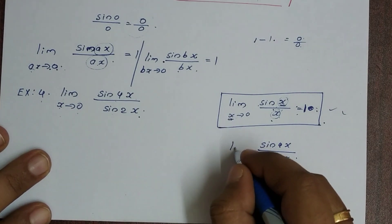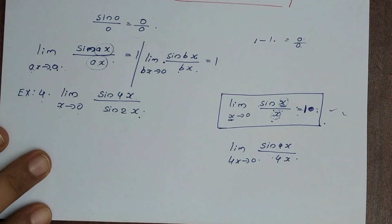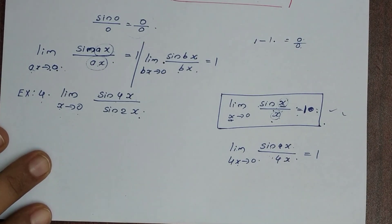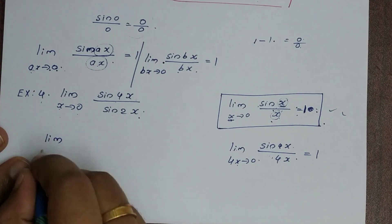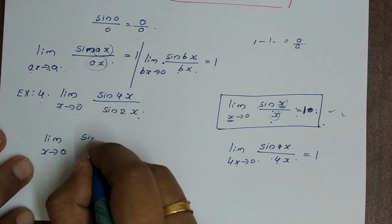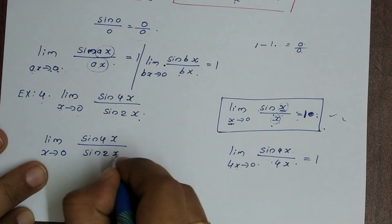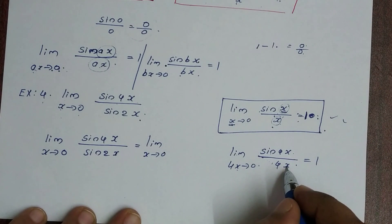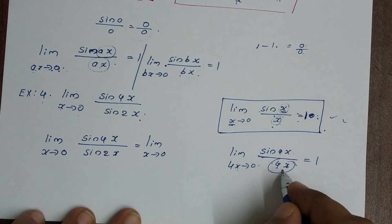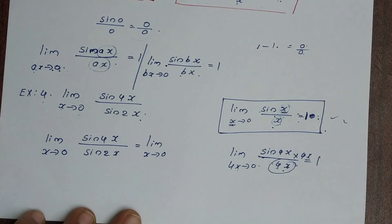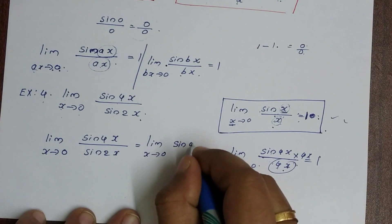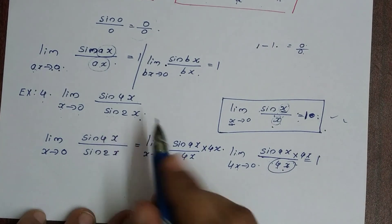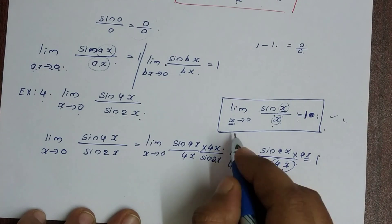This means limit 4x tends to 0 of sin 4x by 4x. So limit x tends to 0, sin 4x divided by sin 2x. We multiply the numerator and denominator: sin 4x divided by 4x, then we handle sin 2x in the denominator.